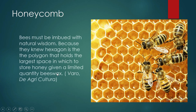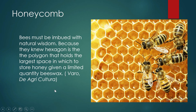There was one mathematician who was so fascinated by this and made this comment: bees must be imbued with natural wisdom because they knew that the hexagon is the polygon that holds the largest space in which to store honey, given a limited quantity of beeswax. Problems like that abound in applied mathematics — you call it optimization.